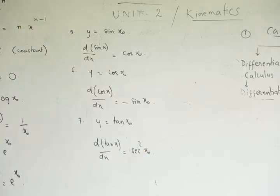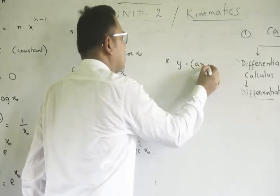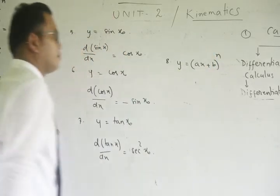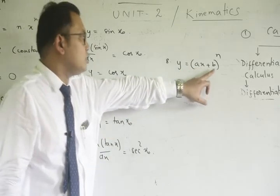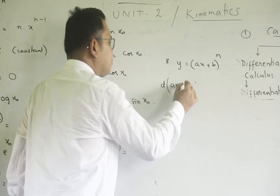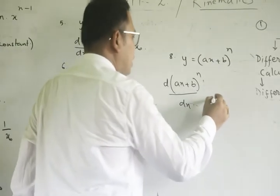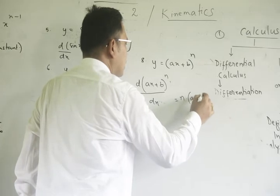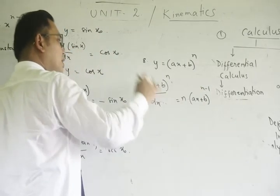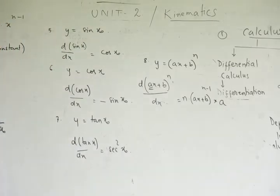The derivative of tan x with respect to x is sec squared x. Number 8: suppose y is equal to ax plus b to the power n, where a and b are constants. The derivative of (ax + b)^n with respect to x is n times (ax + b)^(n-1), multiplied by the coefficient of x, which is a.